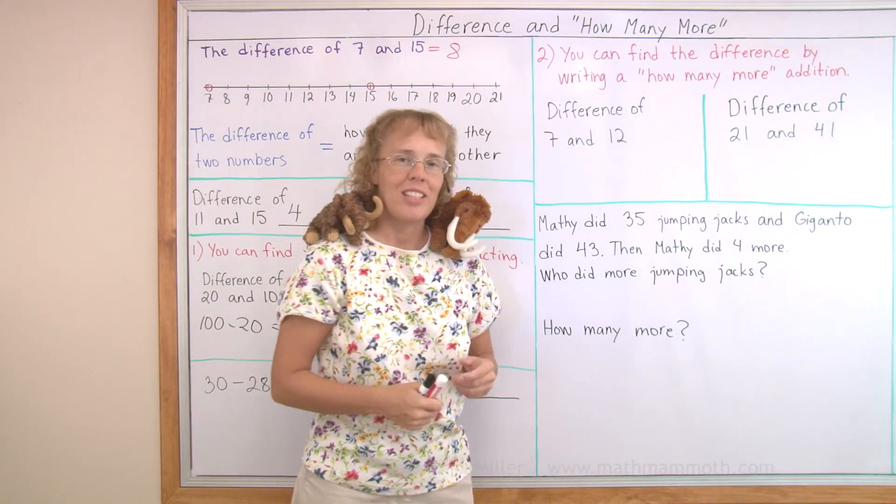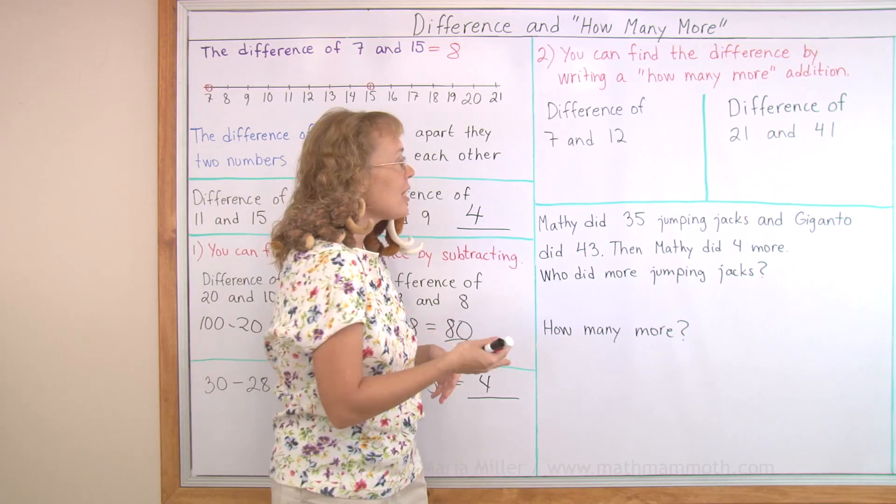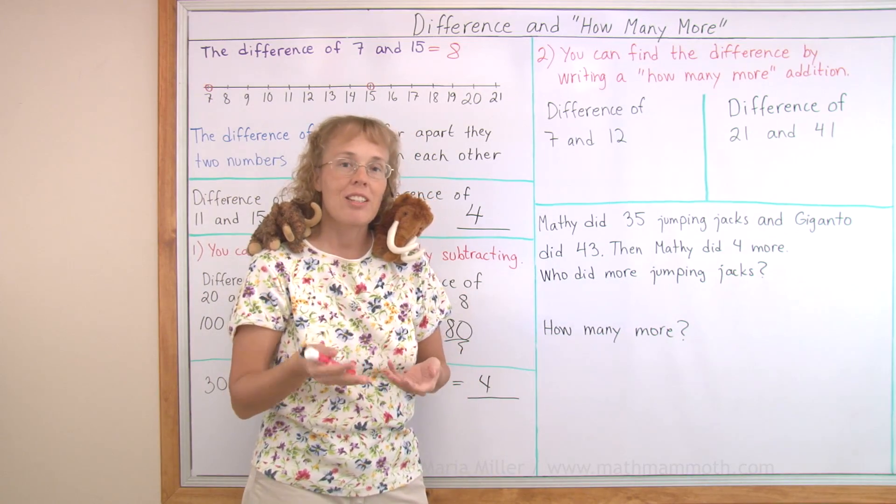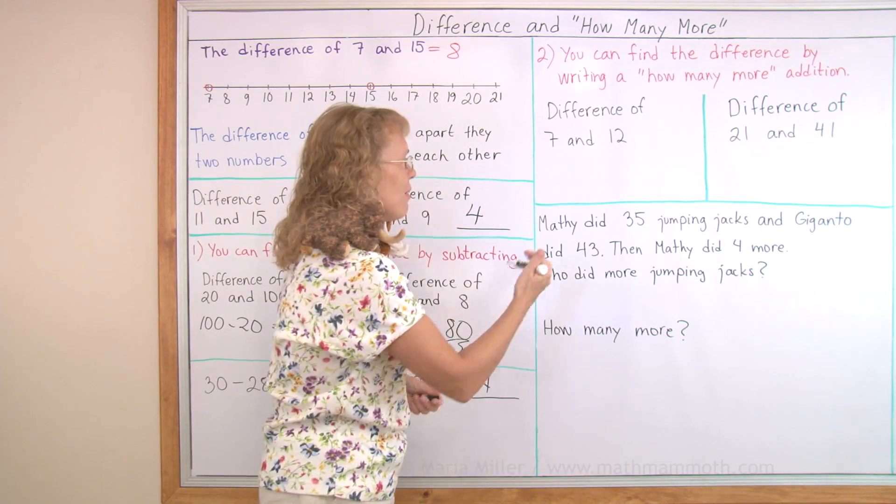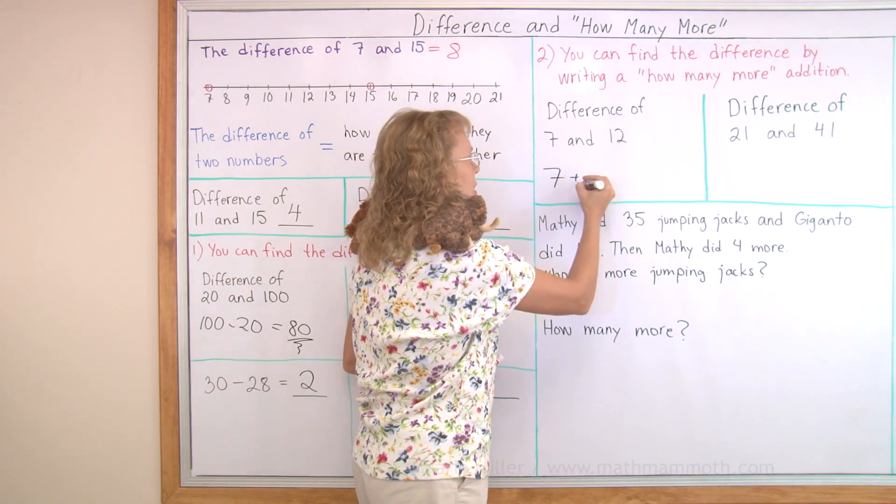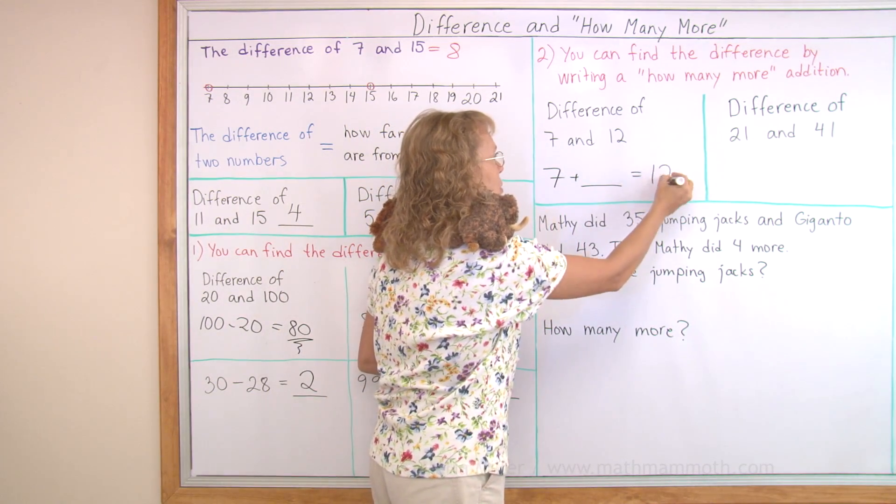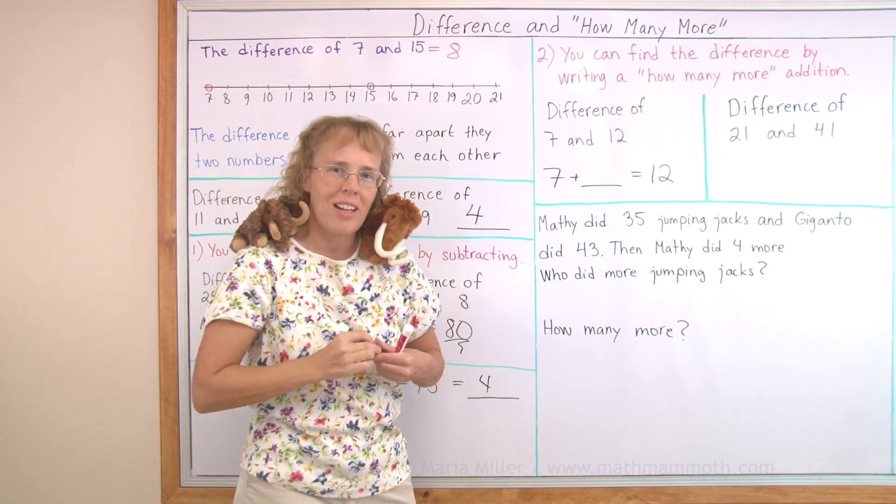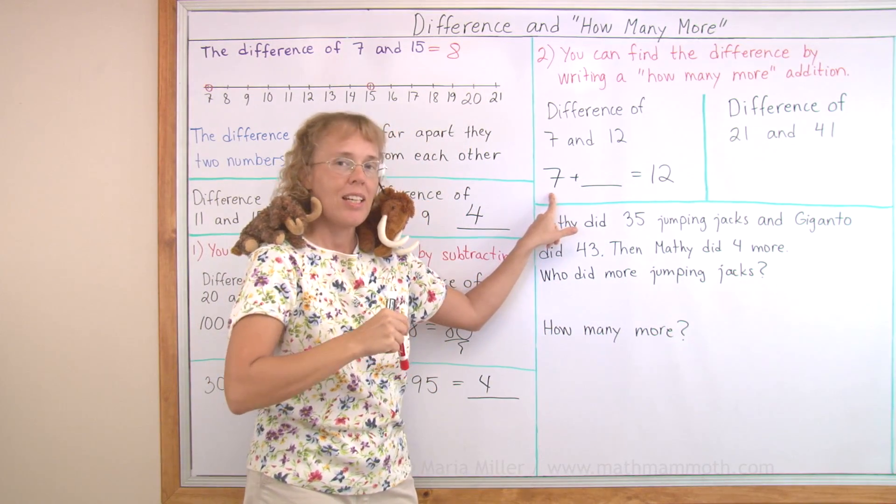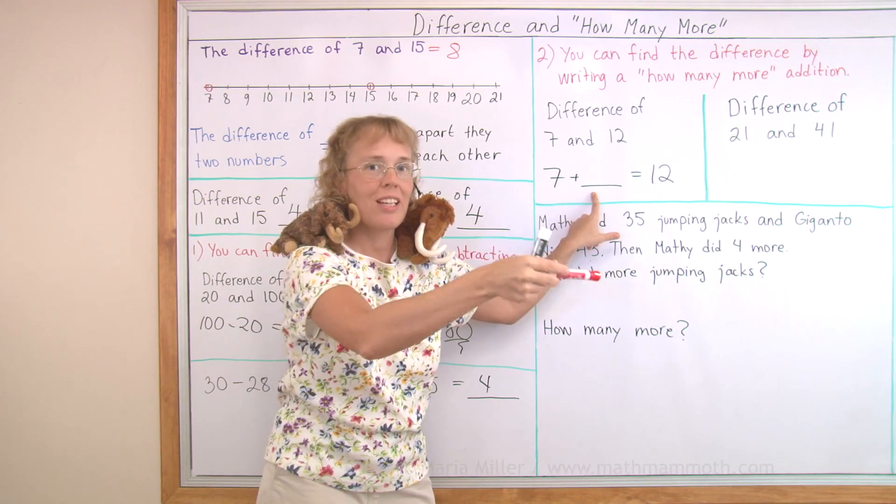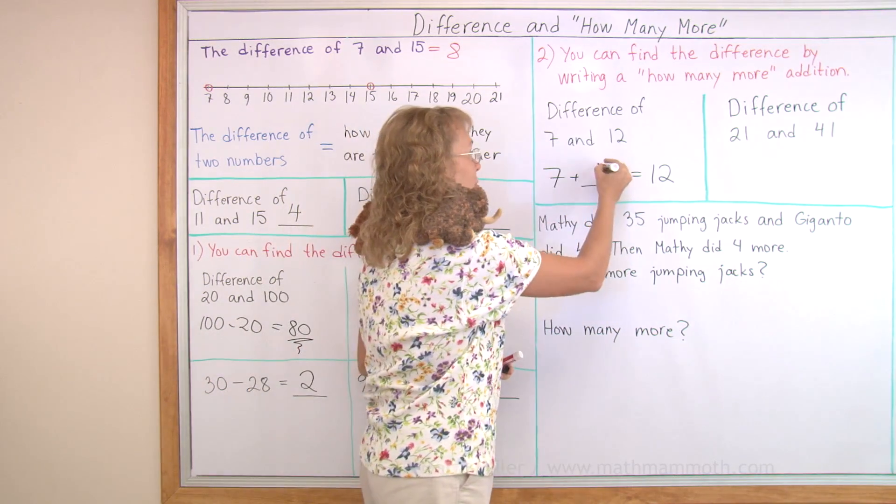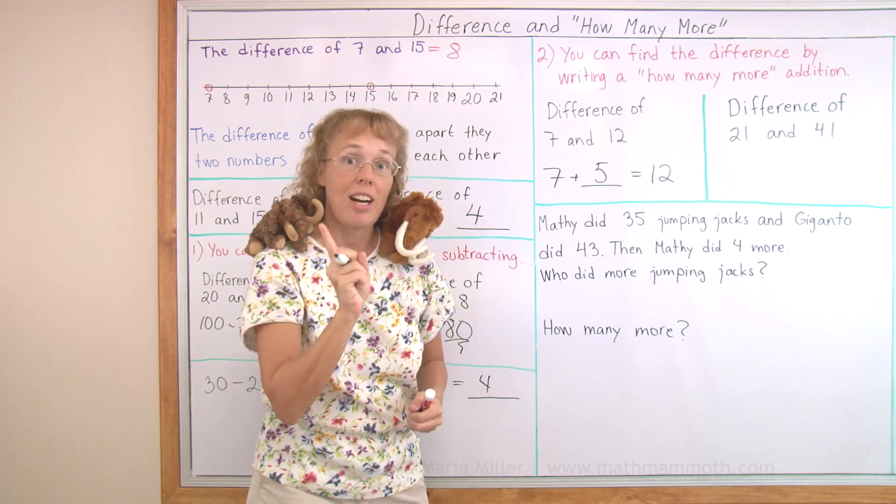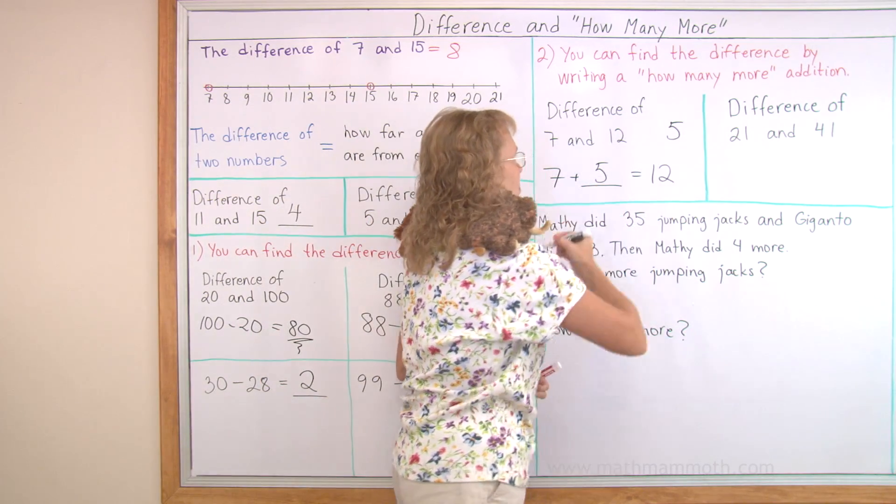And the other way to find a difference of two numbers is to use addition. We write a how many more addition. The difference of 7 and 12, I think this way, 7 plus how many more makes 12. You can think of the number line. If you are at 7, then how many more jumps do you need to make to reach to 12? And that would be 5. So the difference is 5.